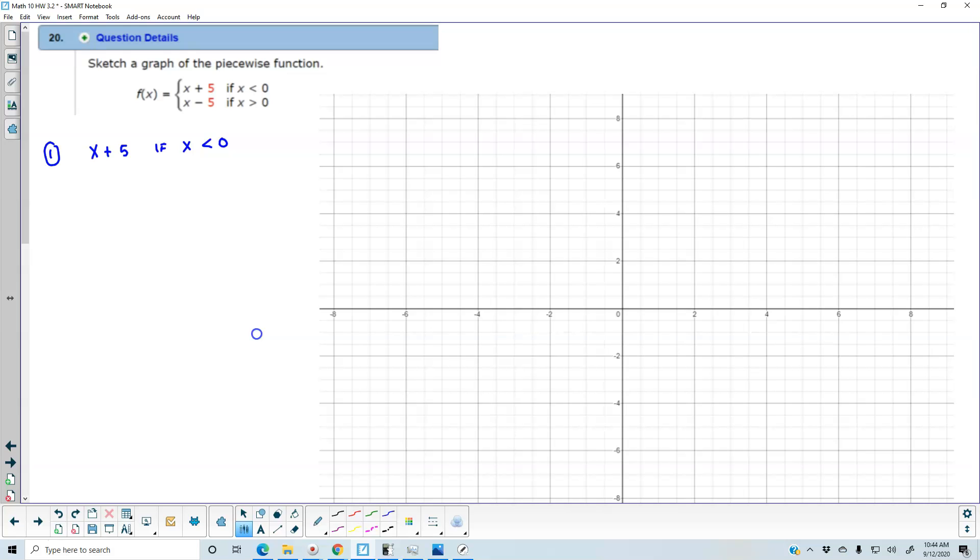So the first graph that we're looking at is x plus 5 if x is less than 0. So in order for us to graph, we can figure out what the slope is. Well the slope is the number that's in front of the x, which is going to be 1 over 1, and then our y-intercept is 0, 5.